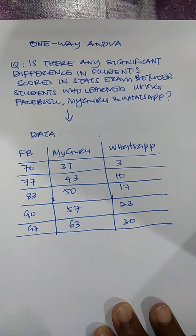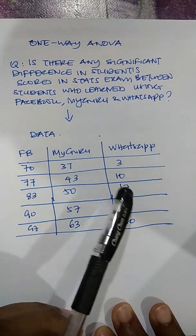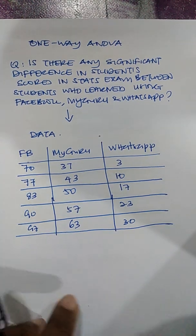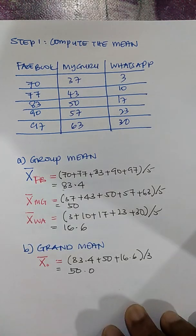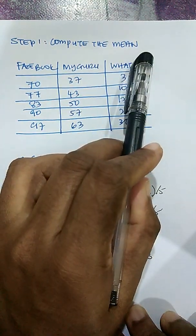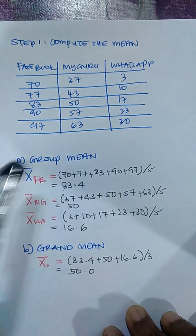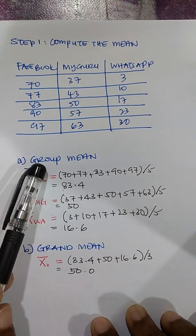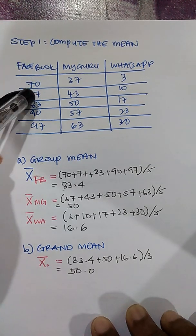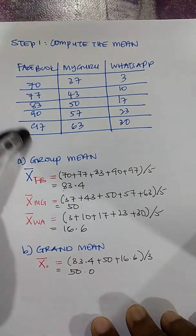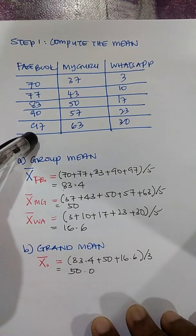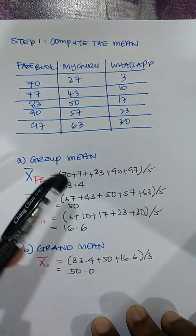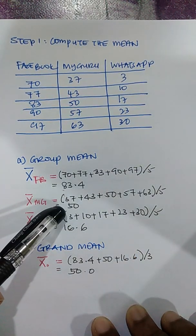Each of these groups has five individuals, so I want to see if there is any difference between the scores of these three groups. The first step is to compute the mean. In computing the mean, I have to compute two important means: the first one is the group mean. To calculate the group mean, I add all the values in that particular group and take the average — so it is 70 plus 77 and so on until 97, divided by 5.